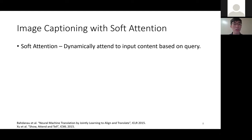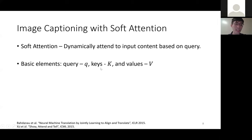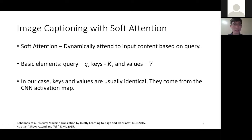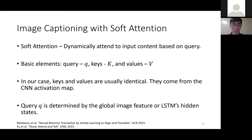Self-attention is able to dynamically attend to input content based on the query. There are three main elements: Query Q, Key K, and Value V. In visual captioning contexts, keys and values are usually identical and come from the same feature representation — for example, the grid feature from the CNN output. The query Q is determined by the global image feature or the LSTM hidden states.